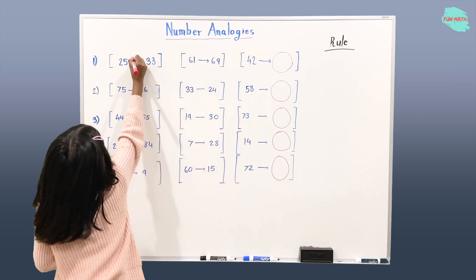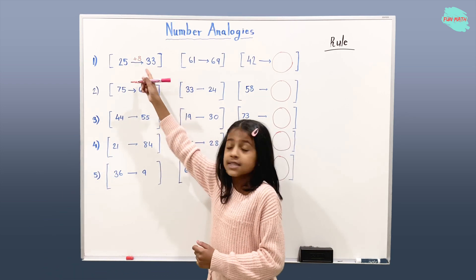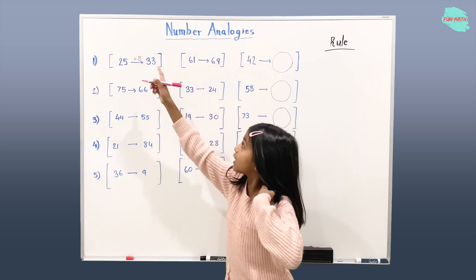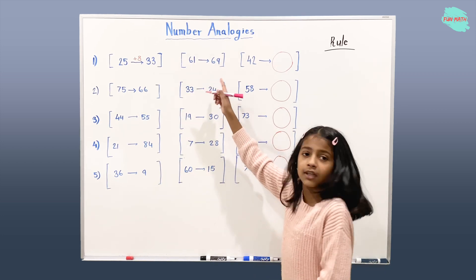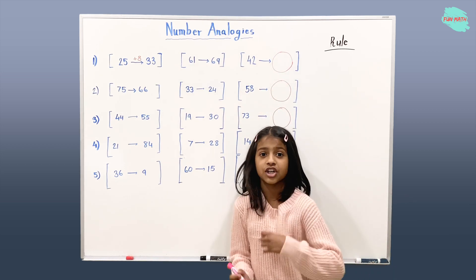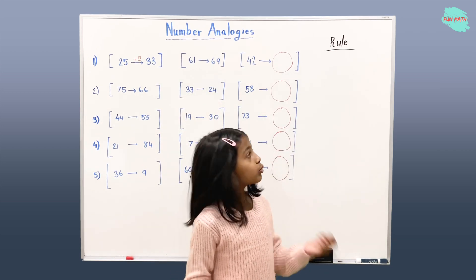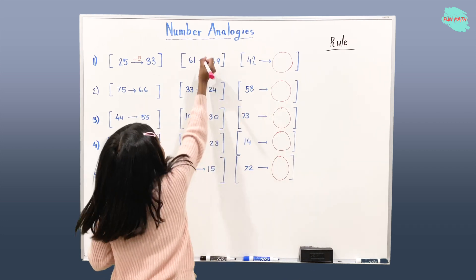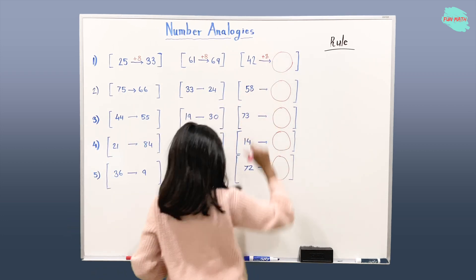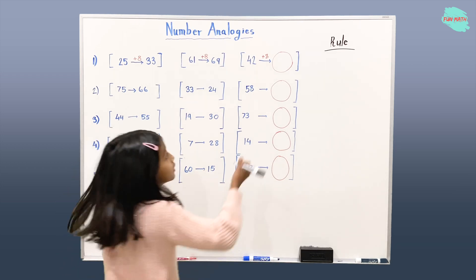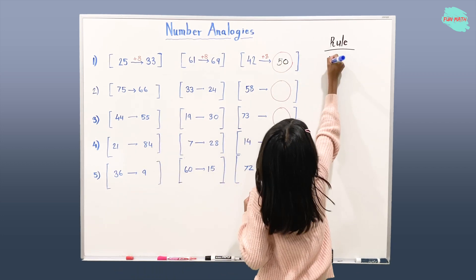So we're going to write that up here. Now since we got plus 8, we're going to apply this rule in this group. And if that works in this group, that means we're going to apply it here and we should get our answer. 61 plus 8 gives us 69 — yes, it's correct! That means our rule works: 42 plus 8 should be 50, right? Our rule here was plus 8.